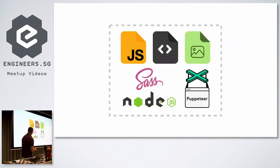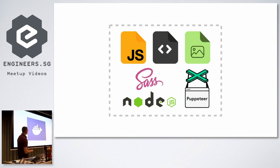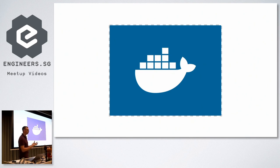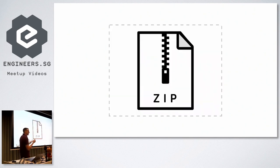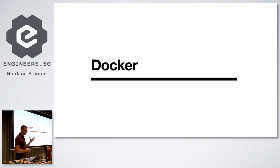What if we could have something like the zip we had before, where we grab everything together and package it — but this time including all the dependencies, like Sass or Puppeteer? So this archive is self-sustainable, with no dependency on the operating system. We call these Docker containers, or just containers in general. Docker is the technology that popularized them, but it's not the only technology that can create containers.